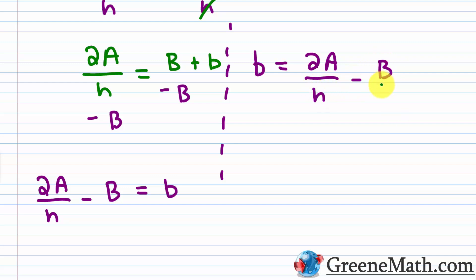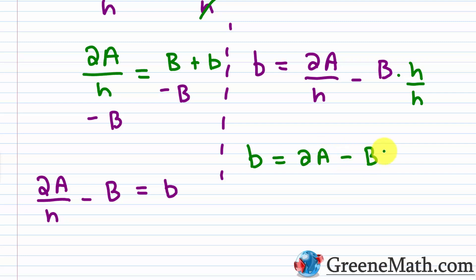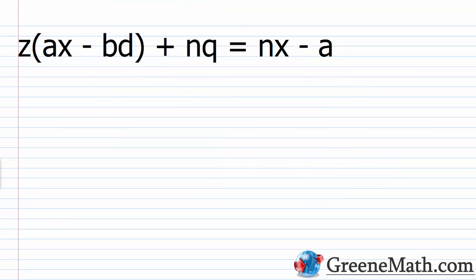Note that we don't have a common denominator in one form, but we can get one by multiplying uppercase B by H over H. If we used the distributive property, we would have gotten one. It's the same answer either way — this is just a matter of personal preference.